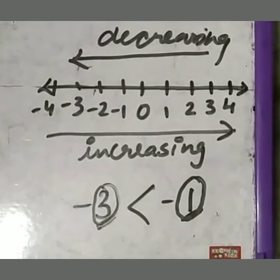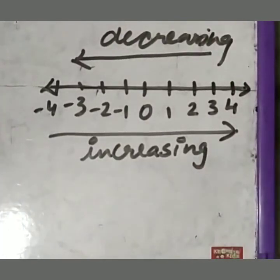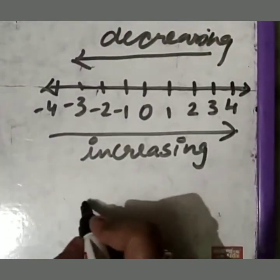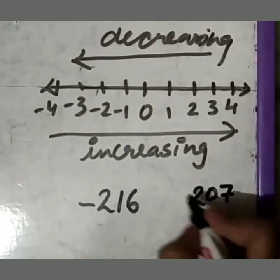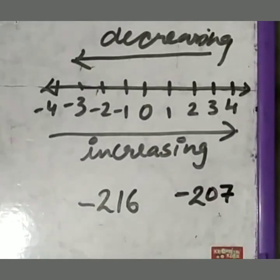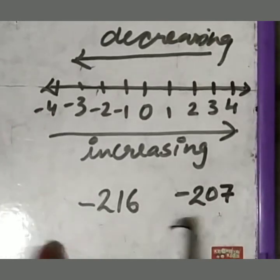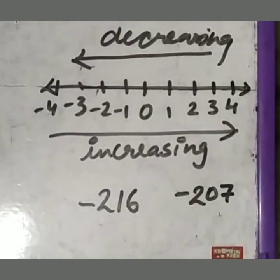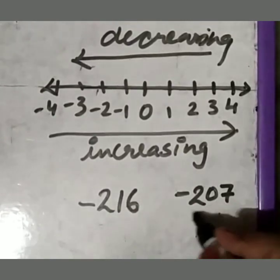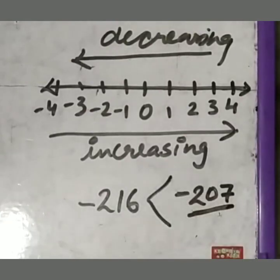You can show small numbers like 1, 2, 3 up to 10 on a number line. But if you have a greater number — suppose minus 216 and minus 207 — you have to tell which one is greater. Both have minus signs, so you check the numerical values. Which one has the smaller numerical value? Minus 207 has the smaller numerical value, so minus 207 will be greater than minus 216.